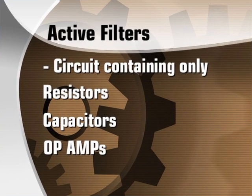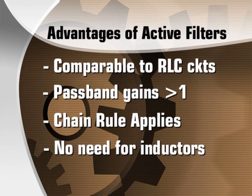Here we will emphasize an active filter as a circuit that contains only resistors, capacitors, and op-amps. Advantages of active filters include similar frequency selectivity when compared to RLC circuits, plus having passband gains greater than one. Because these filters have op-amp outputs, the chain rule applies in cascade design. They do not require inductors, which can be large, lossy, and expensive, especially in low-frequency applications.